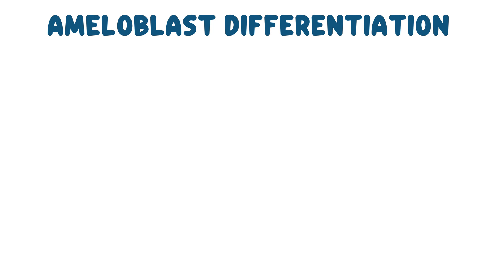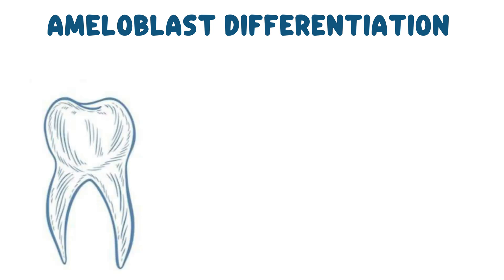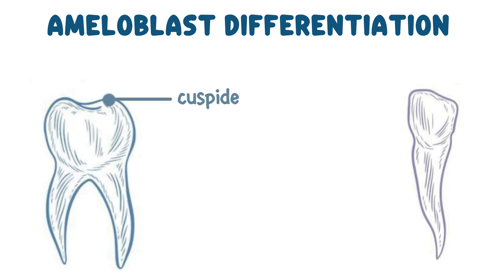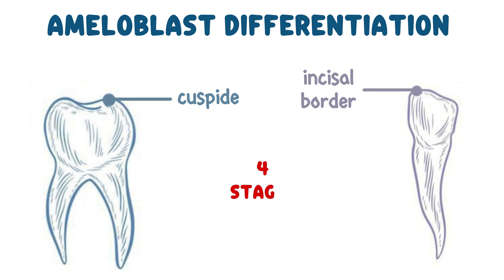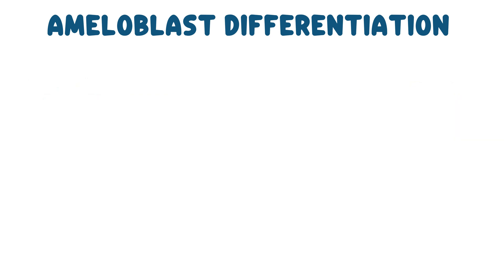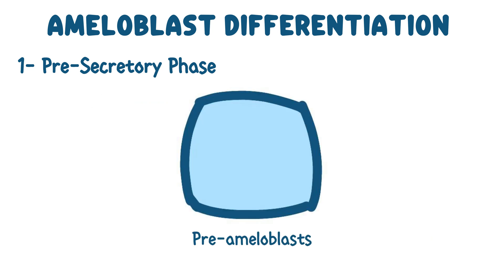Ameloblast differentiation. The differentiation of ameloblast cells starts at the cuspid or incisal border of the tooth and occurs in four stages. Stage 1: Pre-secretory phase. The inner epithelial cells, pre-ameloblasts, have a cuboidal shape with a centrally positioned nucleus.